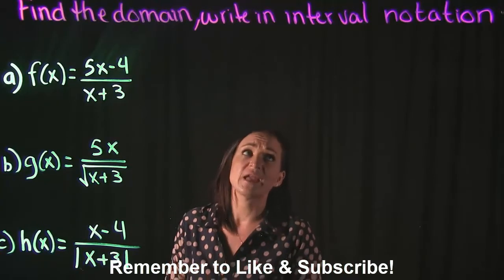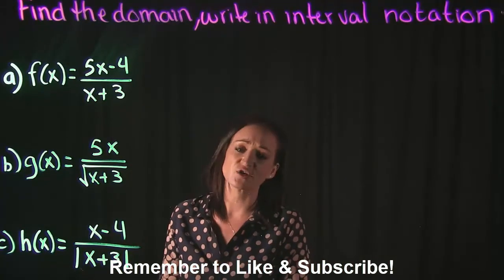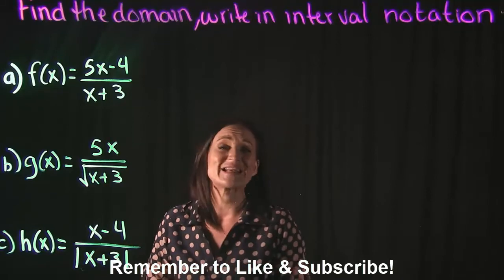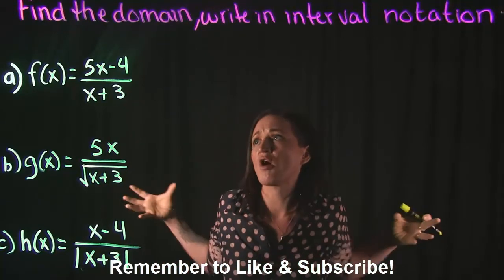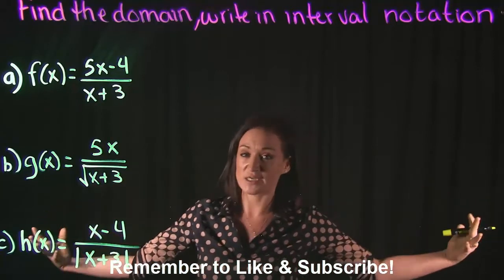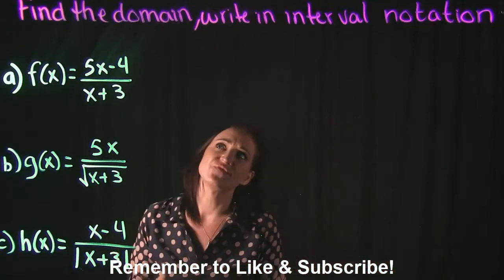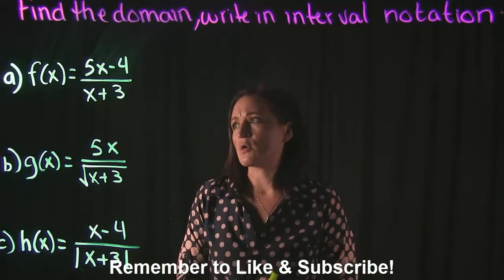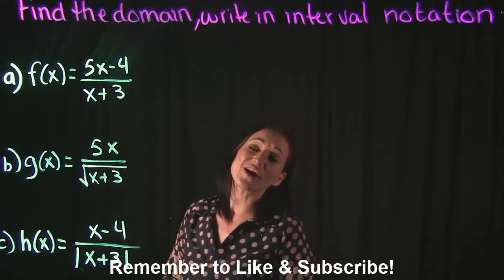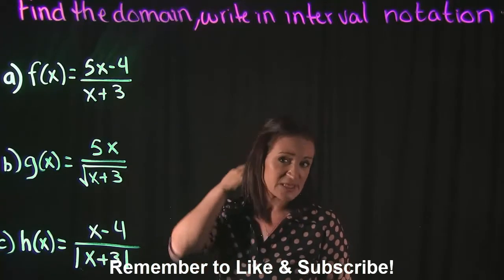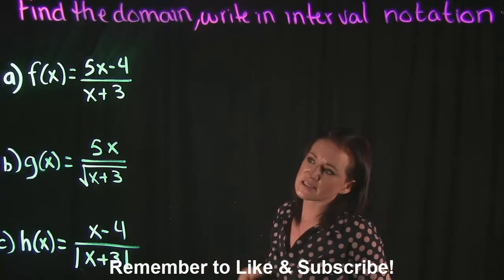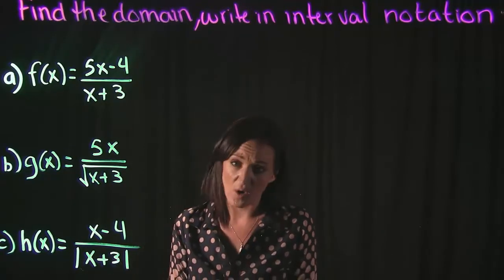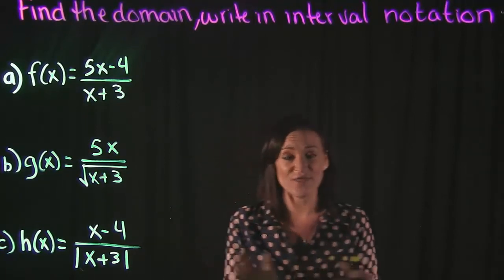When we're finding the domain of a function, especially ones written in fraction form, the one key rule to remember is we need to set the denominator equal to zero and solve. When finding the domain, we're finding where our function exists in our coordinate system — specifically the x values. Fractions are undefined when the denominator equals zero, so that's why we set it equal to zero: it tells us what does not work for our domain.